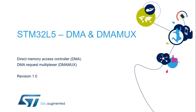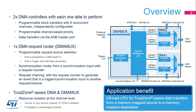Welcome to this presentation of the STM32L5 Direct Memory Access Controller, or DMA. It covers the main features of the DMA controller module, enhanced by the new DMA Request Multiplexer, or DMA MUX module. The main application benefit of the DMA is to offload the CPU for TrustZone-aware data transfers from any memory-mapped source towards any memory-mapped destination.